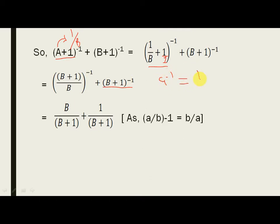Because this is A by 1 then that can be written as 1 by A. If I have A by B to the power minus 1, then I write that as B by A. Now, some of you who want the solid proof of this, I will tell you.